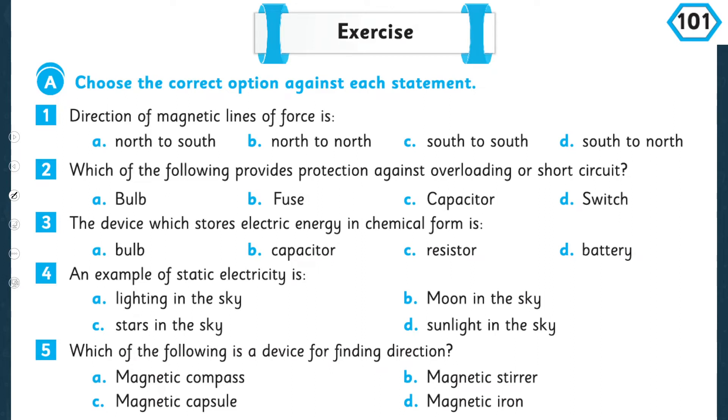For practice, you will move forward towards page number 101. Quickly open it. I hope everybody has opened the page. So now let's quickly complete this exercise. There are MCQs with multiple options. You have to select the correct option. Choose the correct option against each statement. The direction of magnetic lines of force is: north to south, north to north, south to south, south to north. These are north to south.